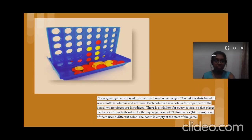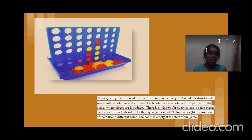This game is basically a vertical board which has 42 windows distributed in seven hollow columns and six rows. Each column has a hole in the upper part of the board where pieces are introduced. One by one, we need to put each coin through the board from the top, and one player is allowed to put only one coin at a time per turn. 21 coins are given to both players.